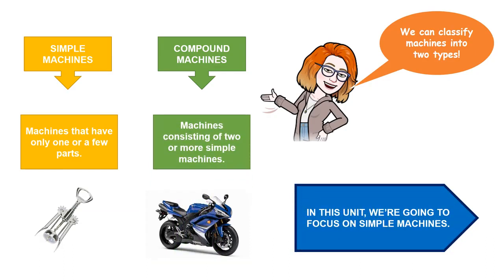We can classify machines into two types. Simple machines, that have only one or a few parts, such as a corkscrew. And compound machines, consisting of two or more simple machines, such as a motorbike.